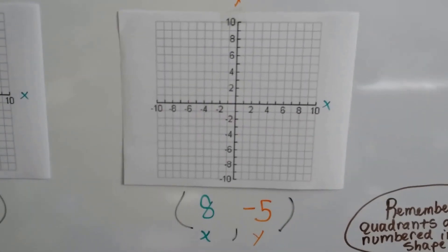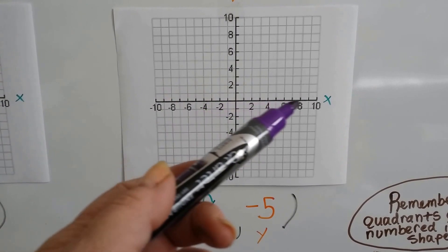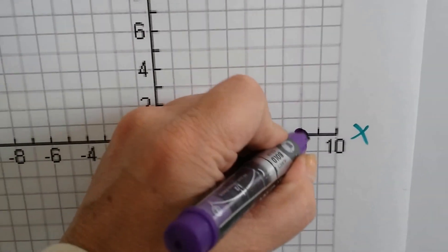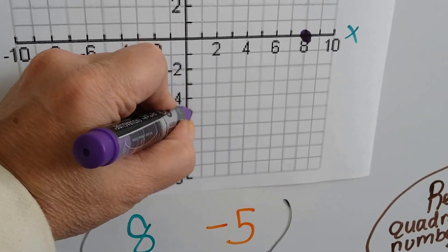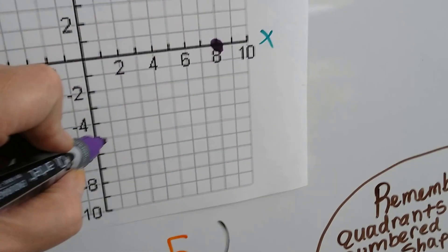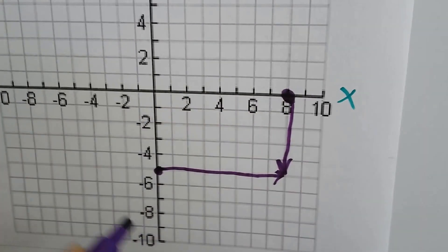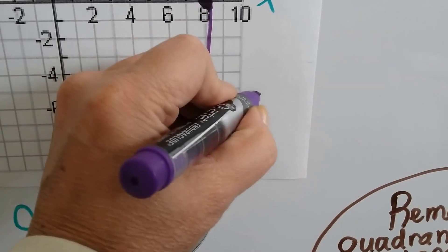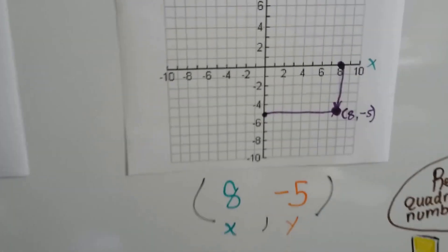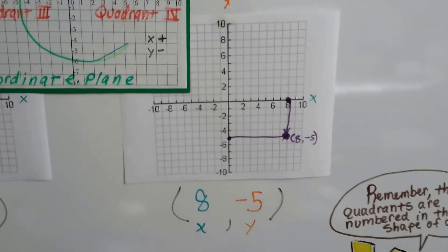Now we have a positive 8 and a negative 5. Let's find positive 8 for x — here are the positive numbers, so positive 8 would be right here. And negative 5 for y is down at the bottom. This line comes across to here, and this one comes down to here, and that's where they meet — right here. That's the coordinates 8 comma negative 5. And you see what quadrant that's in? It's in quadrant 4 — a positive x and a negative y.